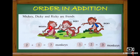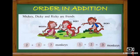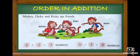Look at here. What picture is this? What animal is it? Monkey. What is the name of this monkey? M-I-C-K-E-Y, Mickey. And this monkey's name is D-I-C-K-Y, Dicky. And the name of this monkey is R-I-C-K-Y, Ricky.